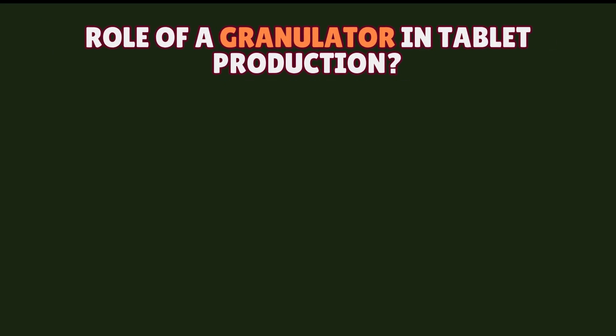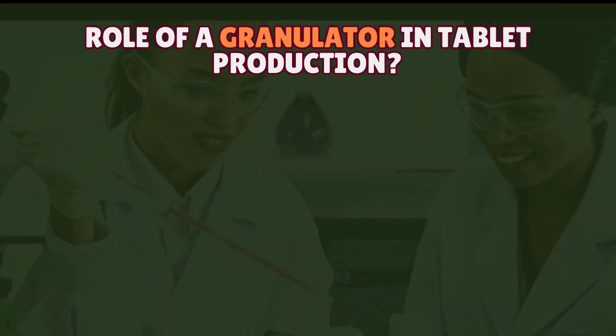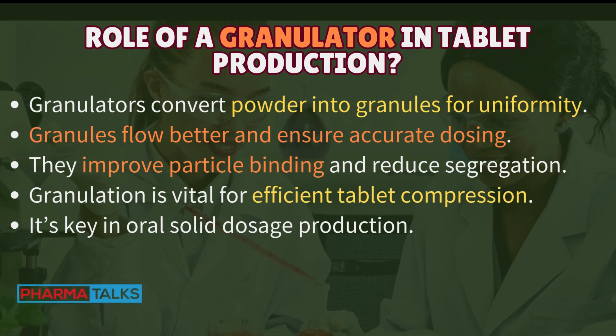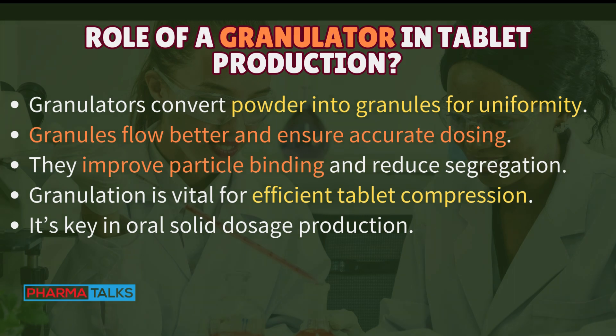Role of a granulator in tablet production? Granulators convert powder into granules for uniformity. Granules flow better and ensure accurate dosing. They improve particle binding and reduce segregation. Granulation is vital for efficient tablet compression. It's key in oral solid dosage production.